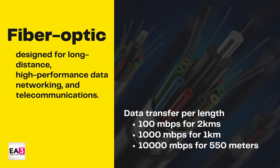Last is the fiber optic cable. This is made of glass or plastic conductor that transmits information using light, with one or more optical fibers enclosed in a shell or jacket. This cable is not affected by electromagnetic and radio frequency interference. They are designed for long distance, high performance data networking and telecommunications. Fiber optic cable has a transfer speed of 100 Mbps for a 2-kilometer length, and 10,000 Mbps for a 550-meter distance. We can say that fiber optic can allow higher speed with a shorter distance.